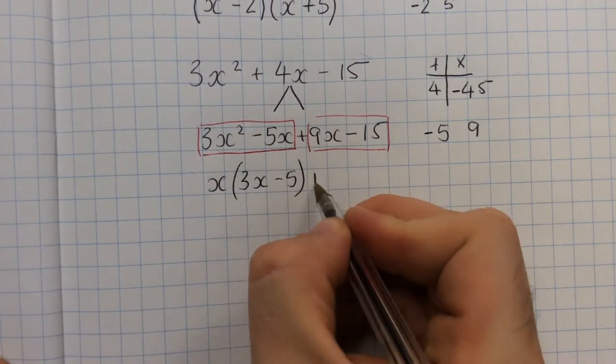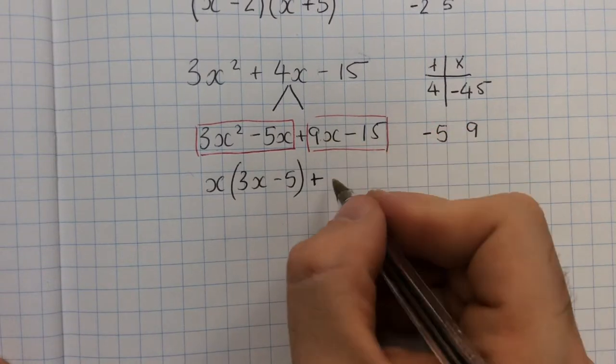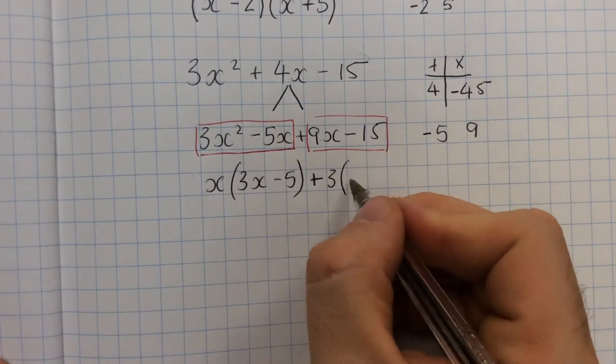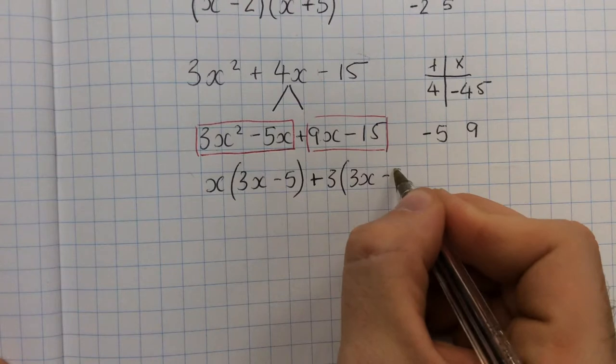Keep whatever sign's in the middle. Look at what's common in these. There's a 3 common in both of those, and we're going to get 3x minus 5 again.